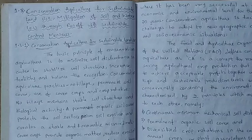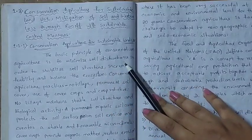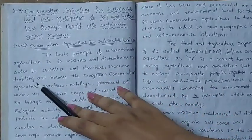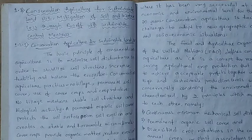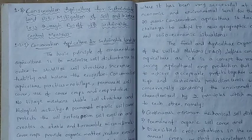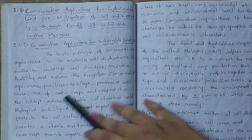The basic principle of conservation agriculture is to minimize soil disturbance in order to stabilize soil structure, increase fertility, and balance the ecosystem. When we practice agriculture, the fertility of the soil decreases over time. So the main goal is to keep fertility from decreasing, keep the soil structure stable, and minimize disturbance so that the ecosystem stays balanced.